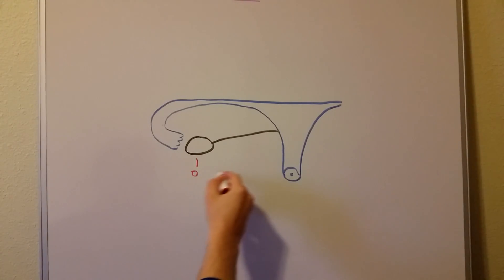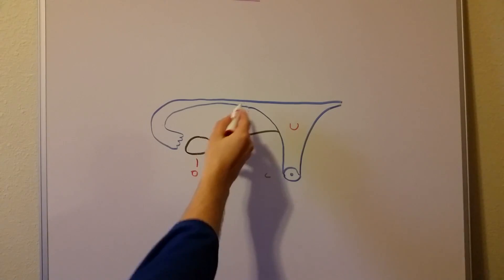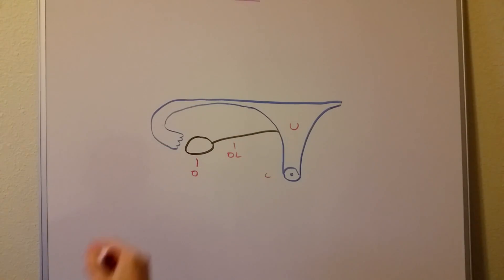So we already talked about the ovary, ovarian ligament or ovarian segment, cervix, uterus, and now we have this fallopian tube. Now a fallopian tube has parts to it.